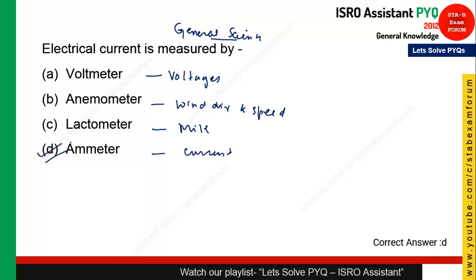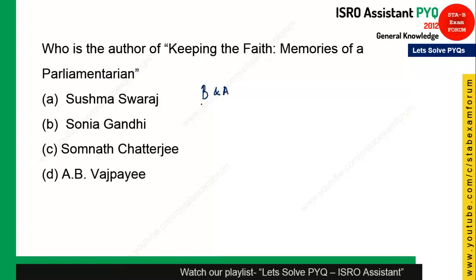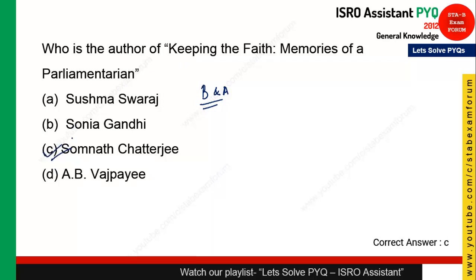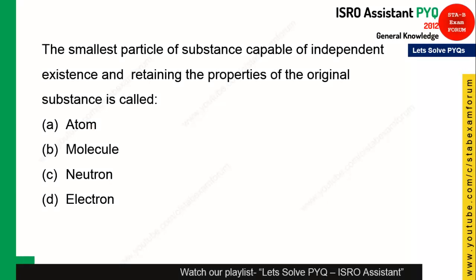The next question is from books and authors. The book 'Keeping the Faith: Memoirs of a Parliamentarian' was written by Somnath Chatterjee. Option C is the right answer. This was a current affairs topic at that time.